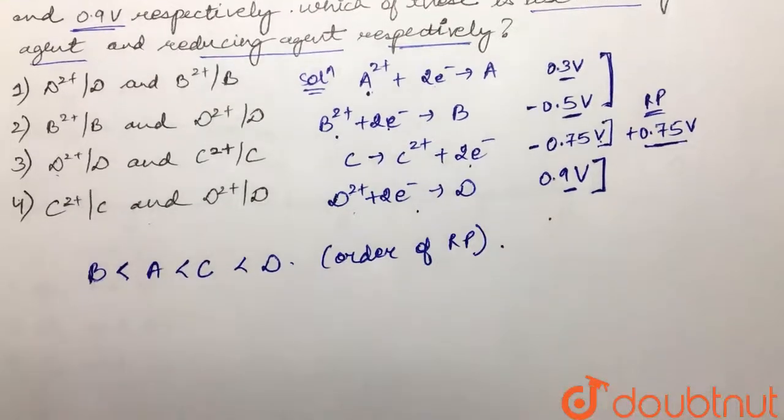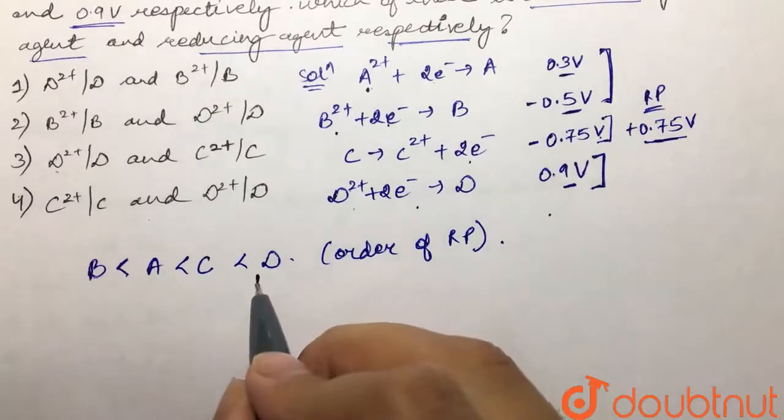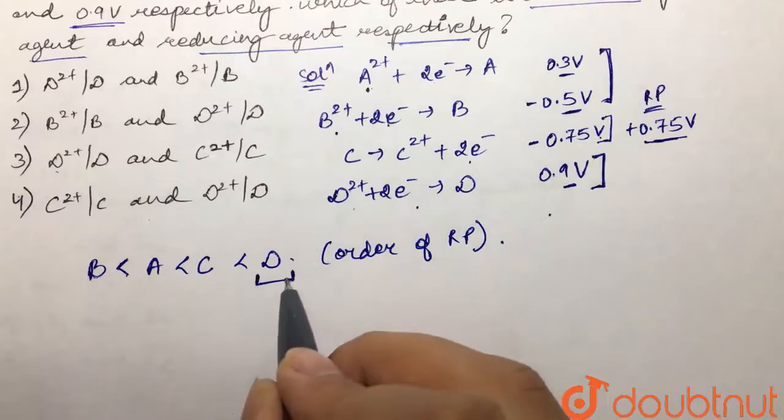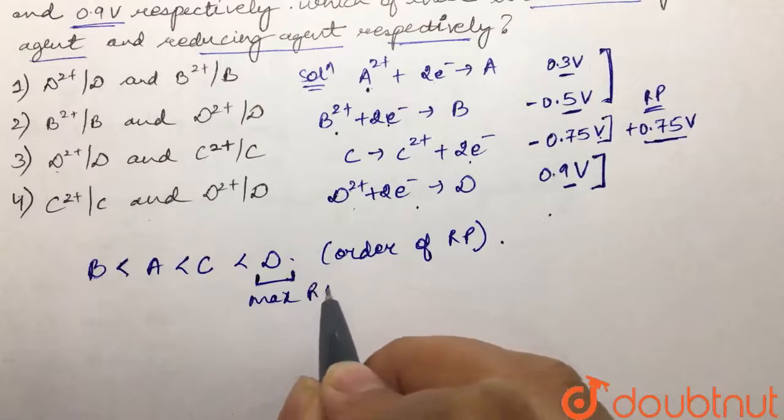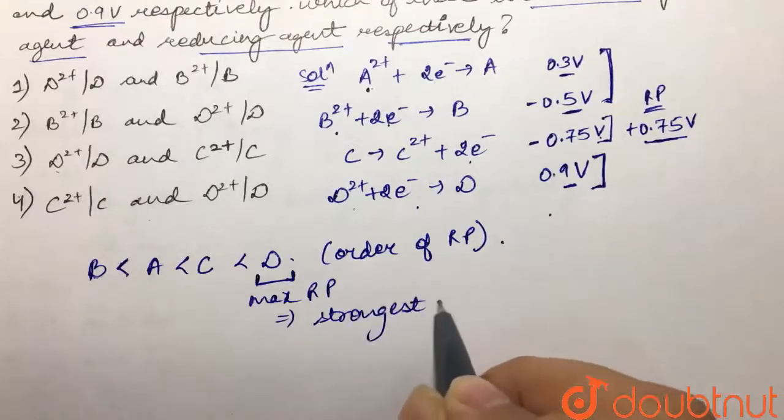So now we know that greater is the reduction potential, the greater is the tendency to get reduced and oxidize the other species. So because this is maximum reduction potential, this is going to act as the strongest oxidizing agent.